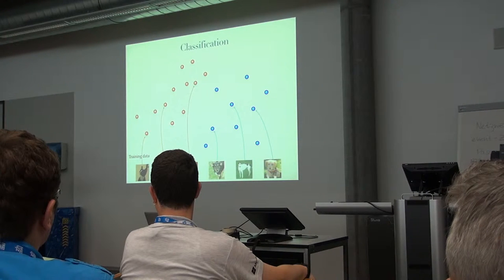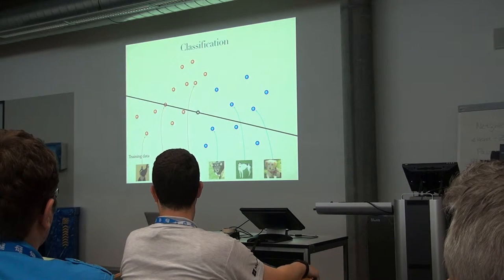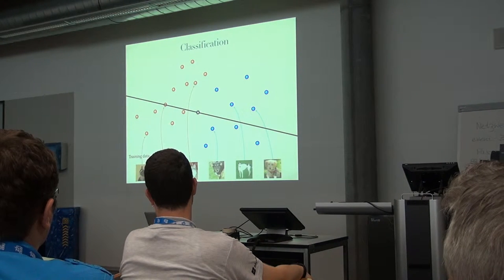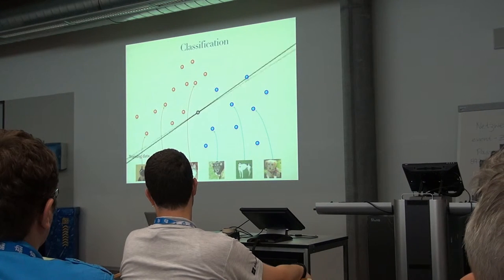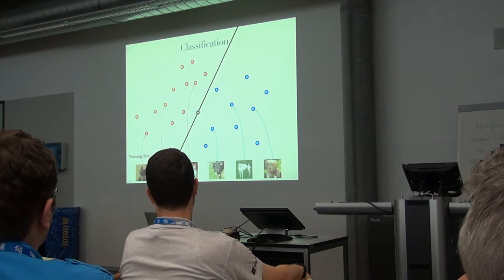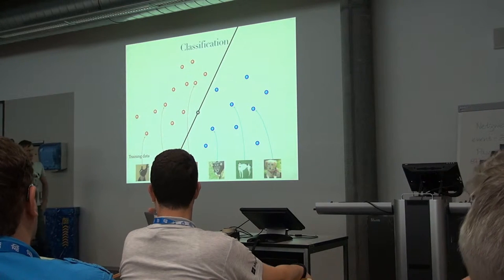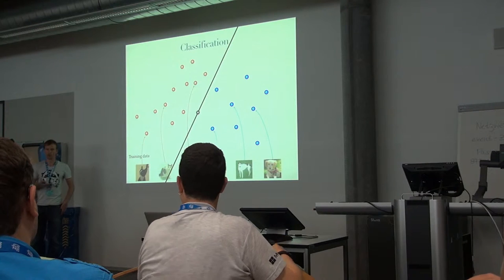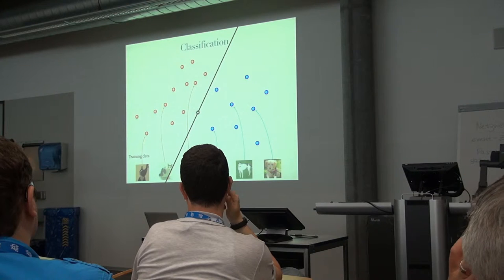For each data point we have this additional label information. We want to classify these points, and we want to be simple in the model we choose — we choose a linear model. We just use a line, or a plane, to separate the two classes. Some planes are not the best choice, but here is a better plane that perfectly separates the data. This process of defining the plane is what we call training.